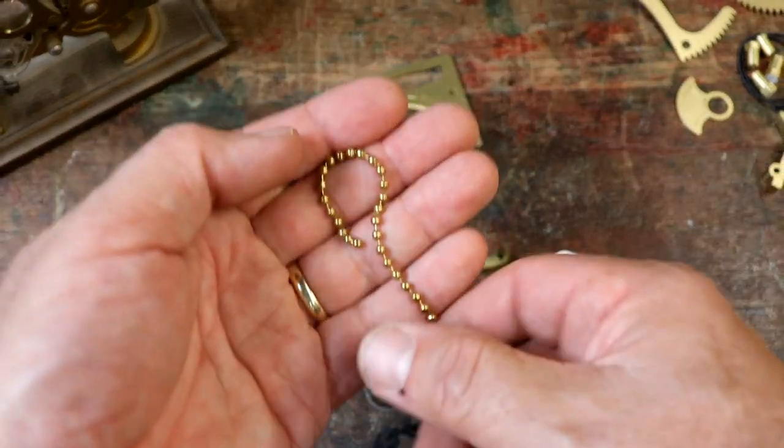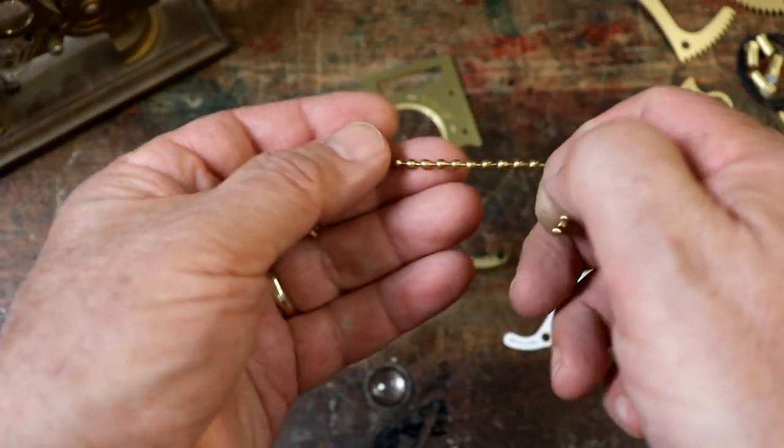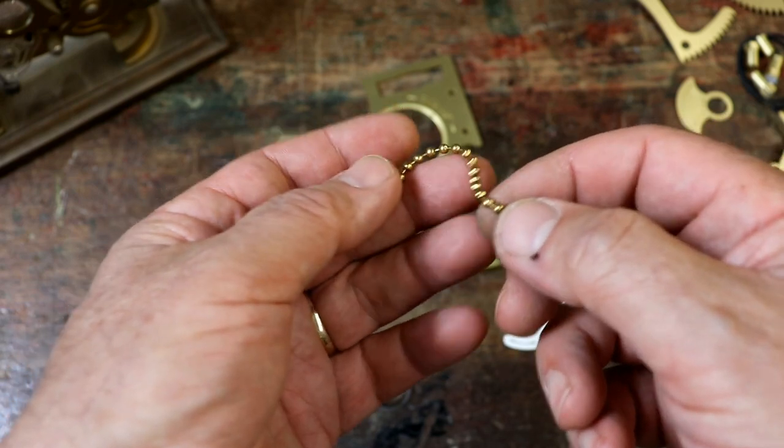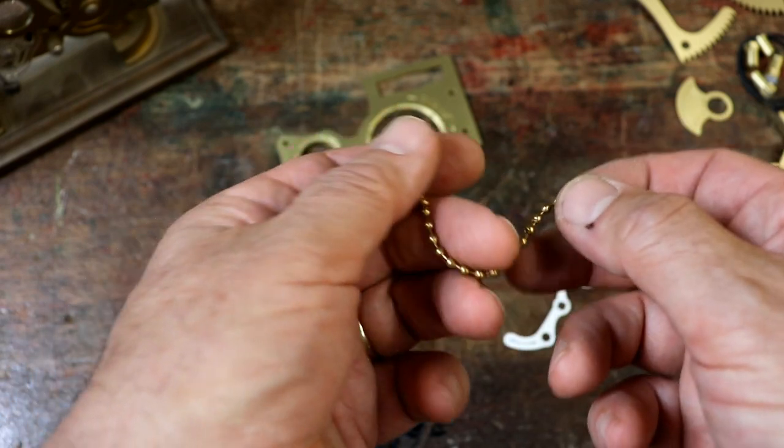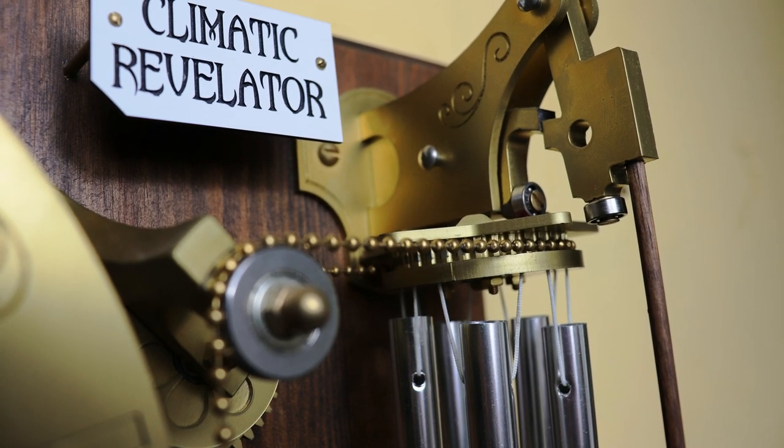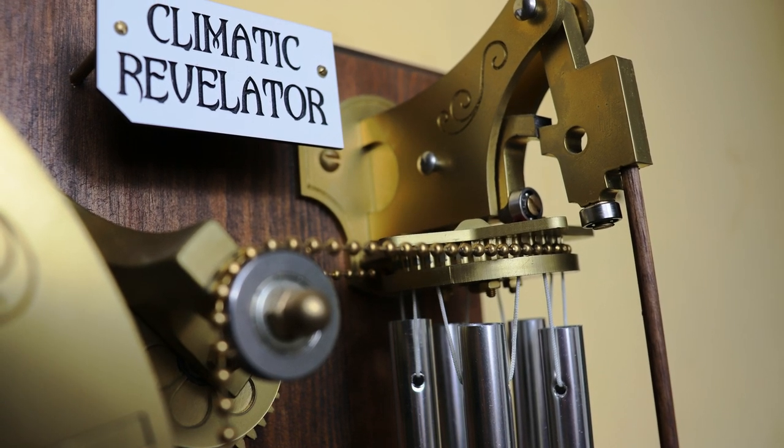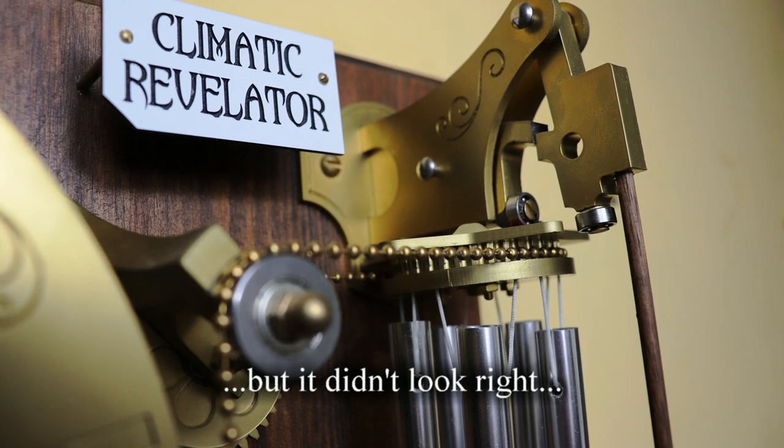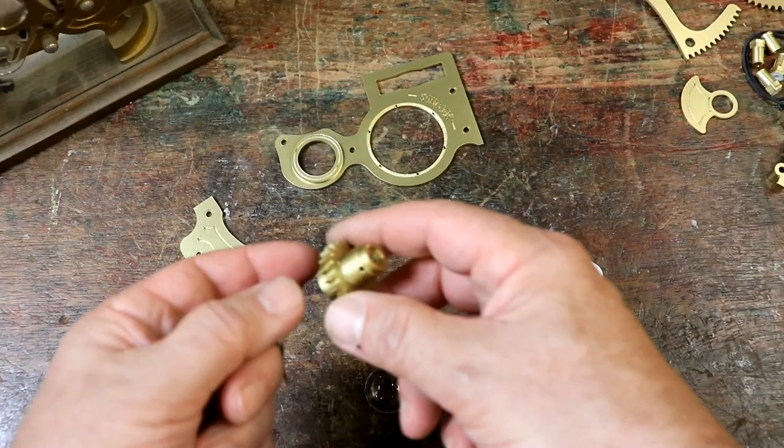I have got lots of this chain. The brass ball chain which is fabulously useful for things like the climatic revelator because you can use it as a drive chain and it'll change directions through any axis.